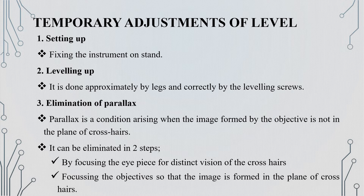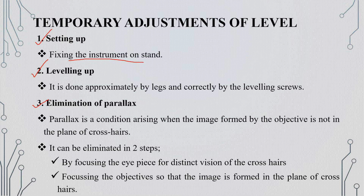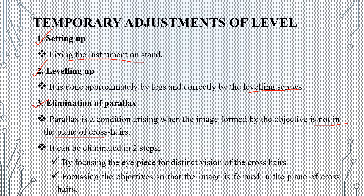Next are the temporary adjustments of the level. There are three steps. The first one is setting up, the second one is leveling up, and the third one is elimination of parallax. Setting up involves fixing the instrument in position. Leveling up ensures the instrument is level. For elimination of parallax, the image must be formed in the plane of the crosshairs by focusing on the eyepiece and the objective correctly.